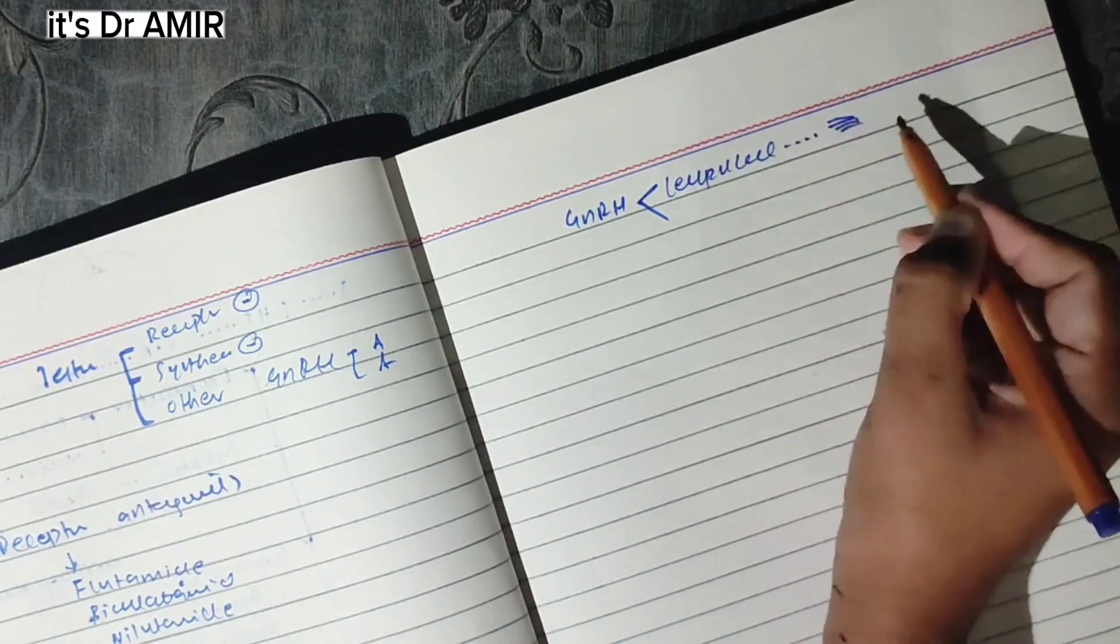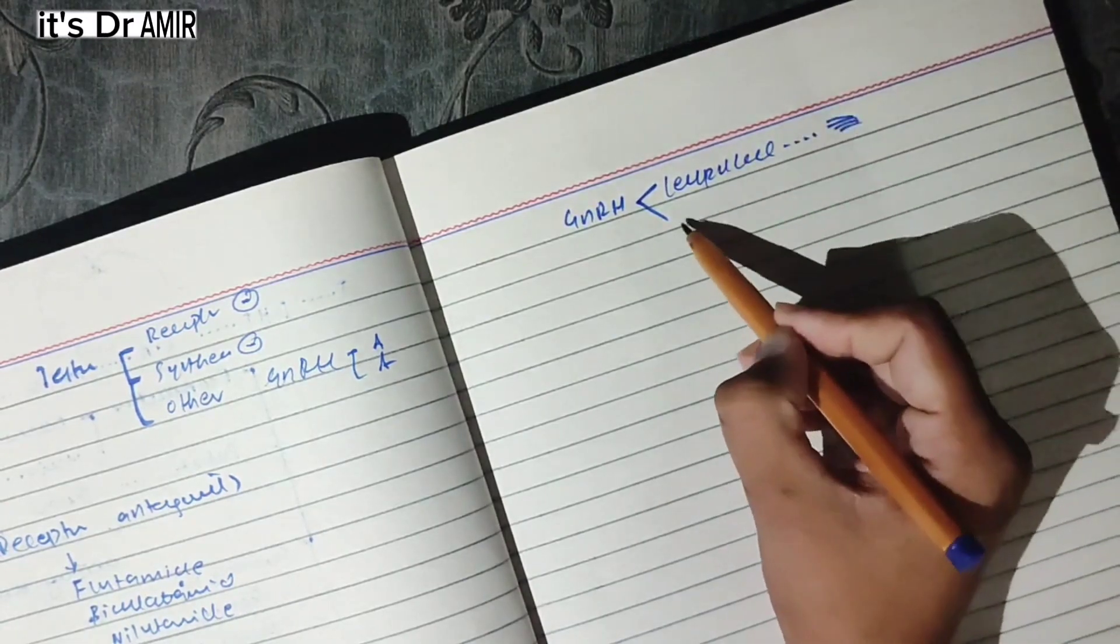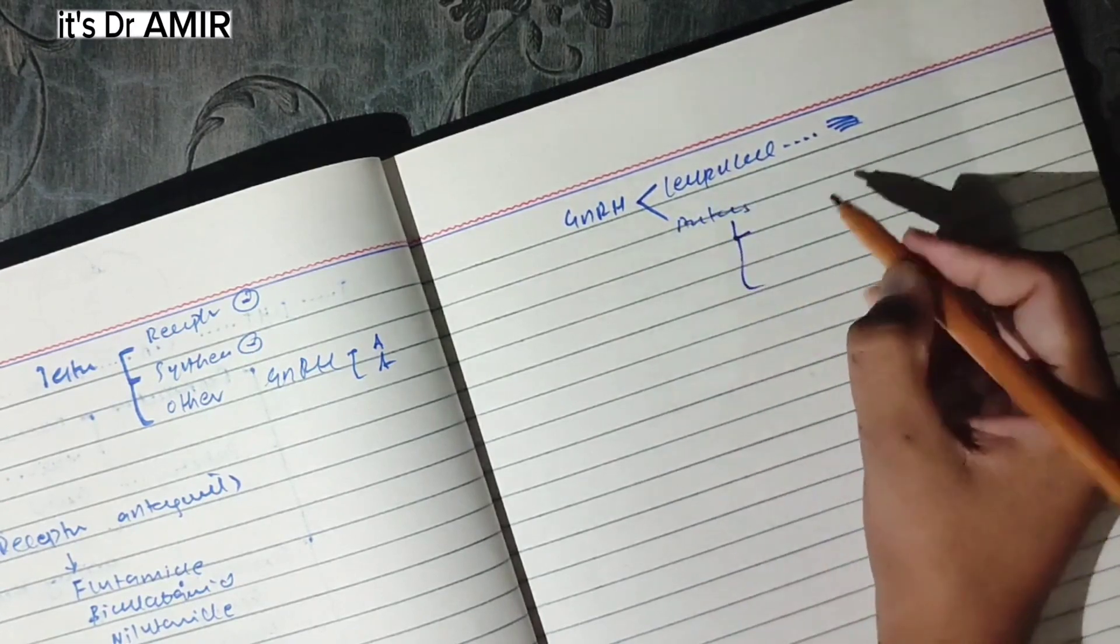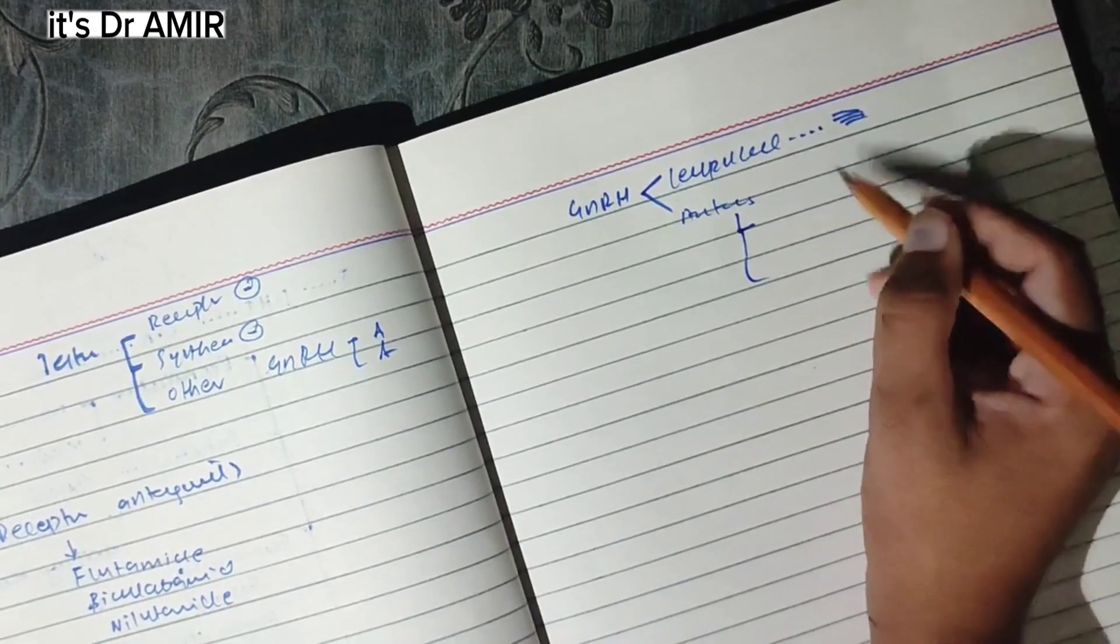We also have GnRH agonists. This is why it causes excessive initial stimulation and then desensitizes the receptor. Same as antagonists, we can use GnRH agonists and antagonists.